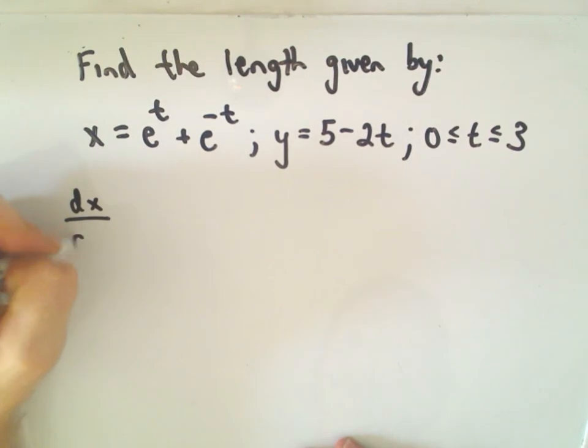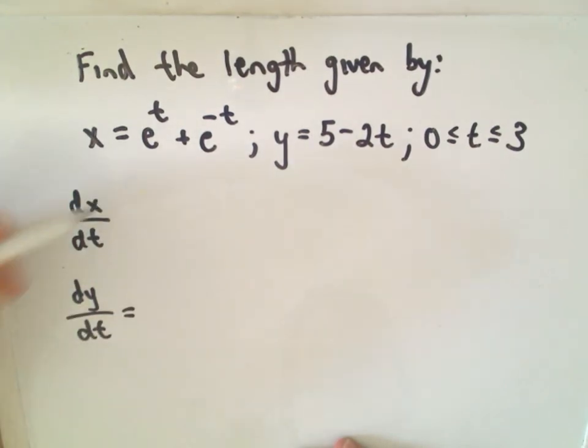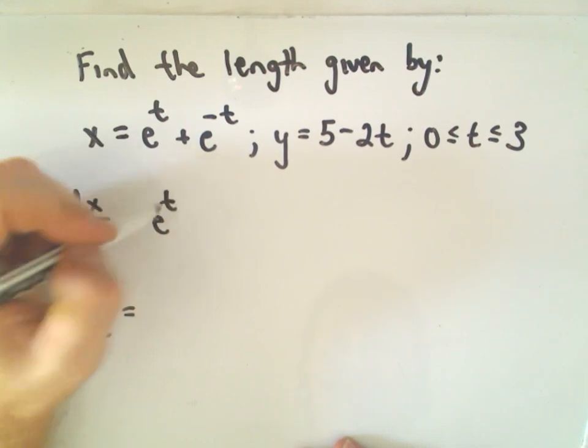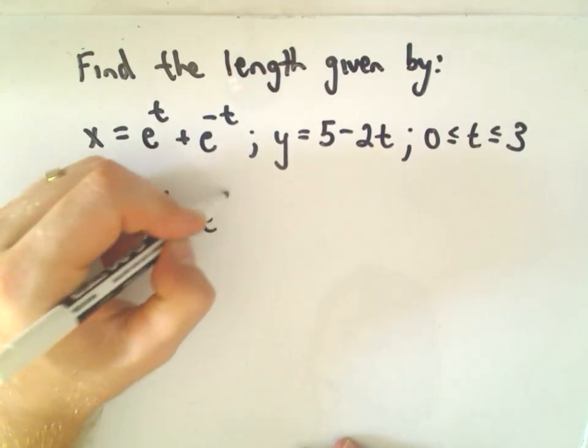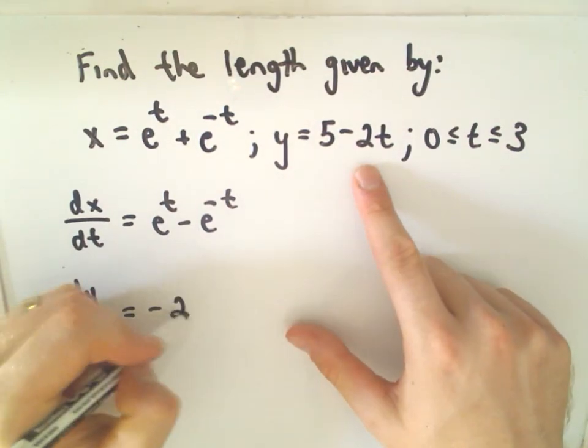So again, the first thing, we've got to figure out the derivative of x with respect to t, we have to figure out the derivative of y with respect to t. So notice the derivative of x with respect to t will simply get e to the t minus e to the negative t. The derivative of y with respect to t will simply get negative 2.